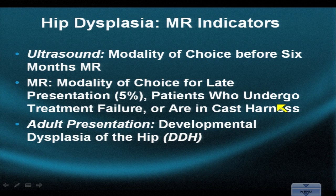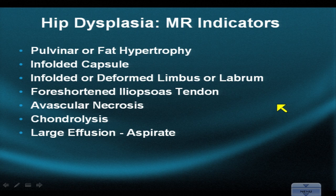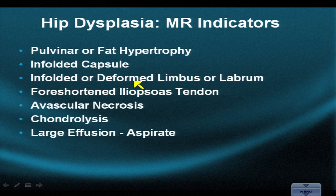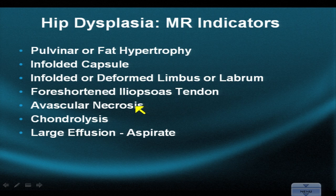Some of the things that can persistently alter the biomechanics of the hip even with proper attempts at therapy include hypertrophy of the fat in the joint — so-called pulvinar fatty hypertrophy — folding and scarring of the capsule, deformity and infolding of the labrum or limbus, foreshortening and contraction of the iliopsoas tendon, avascular necrosis, loss of cartilage or chondrolysis, and very large effusions, which sometimes may need to be aspirated.